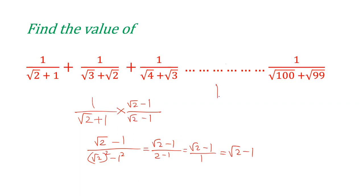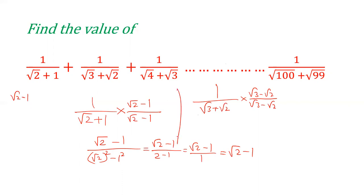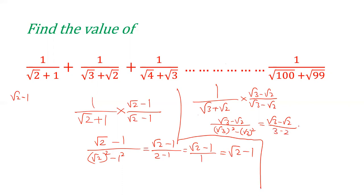Now, for the second term 1/(root 3 + root 2), we multiply by (root 3 − root 2)/(root 3 − root 2). The numerator becomes root 3 − root 2, and the denominator becomes root 3 squared minus root 2 squared = 3 − 2 = 1. So the value of the second term is root 3 − root 2, and the first term was root 2 − 1.